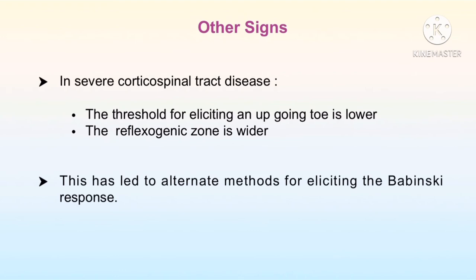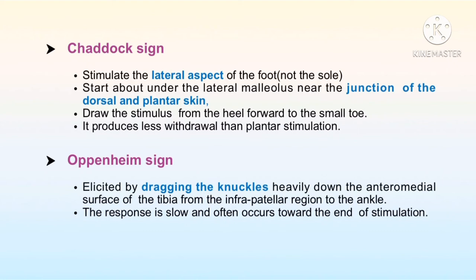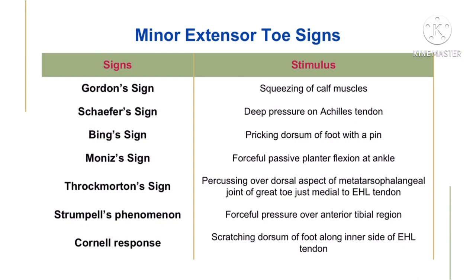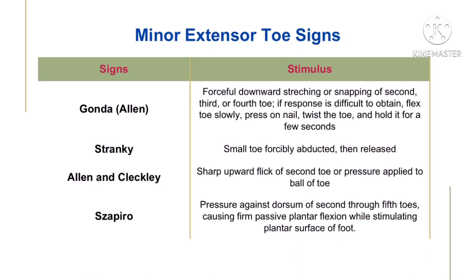In severe corticospinal tract diseases, the threshold for eliciting an up-going toe is lower and the reflexogenic zone widens, leading to alternate methods for eliciting the Babinski response. The Chaddock sign: the lateral aspect of the foot is stimulated, starting under the lateral malleolus near the junction of the dorsal and plantar skin, drawing the stimulus from the heel forward to the small toe — this produces less withdrawal than plantar stimulation. The Oppenheim sign is elicited by dragging the knuckles heavily down the anteromedial surface of the tibia from the infrapatellar region to the ankle; the response is slow and often occurs towards the end of stimulation. Additional named signs are also described when the reflexogenic zone is increased.